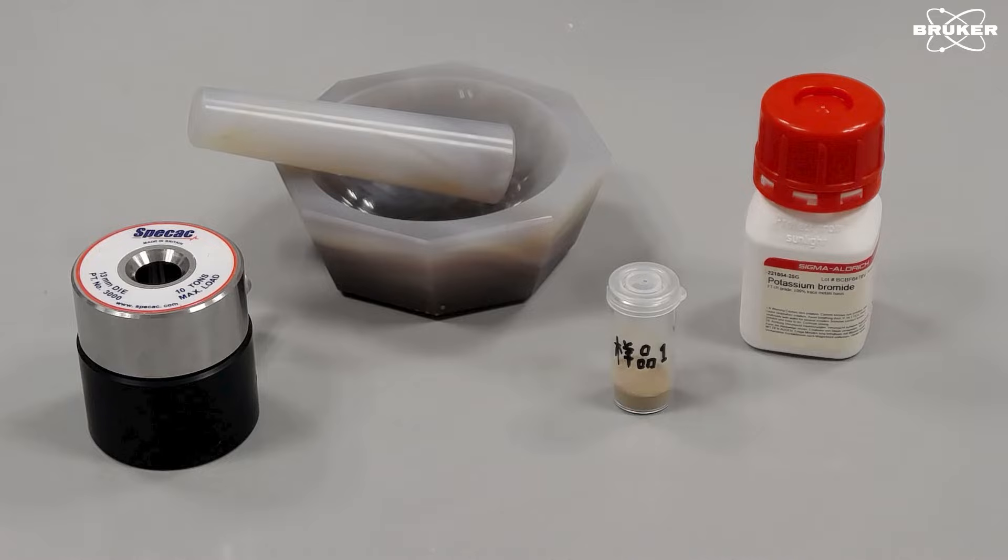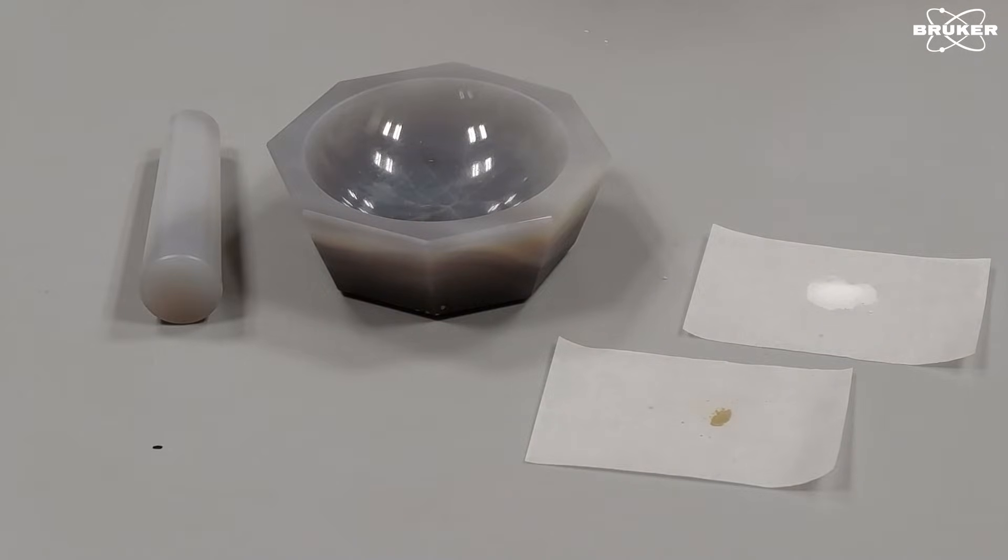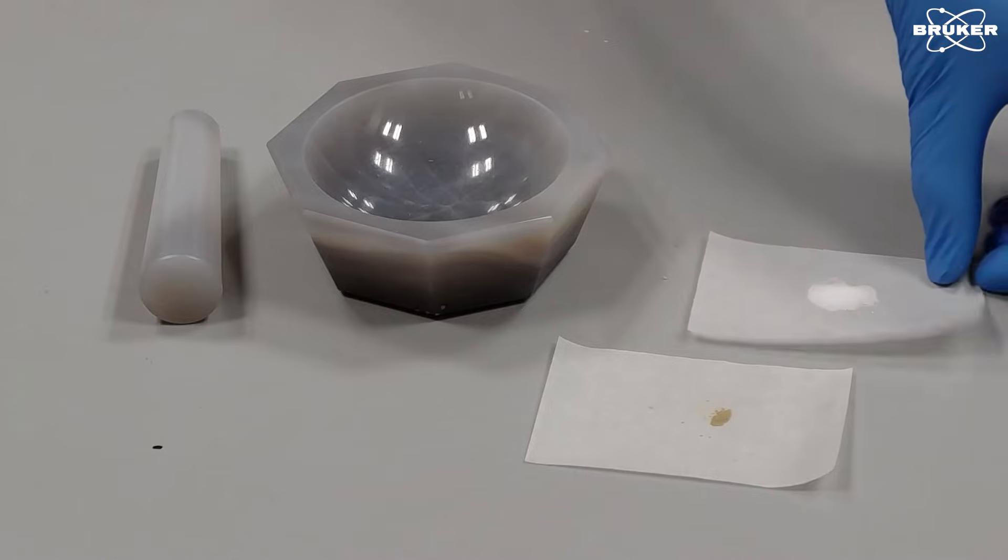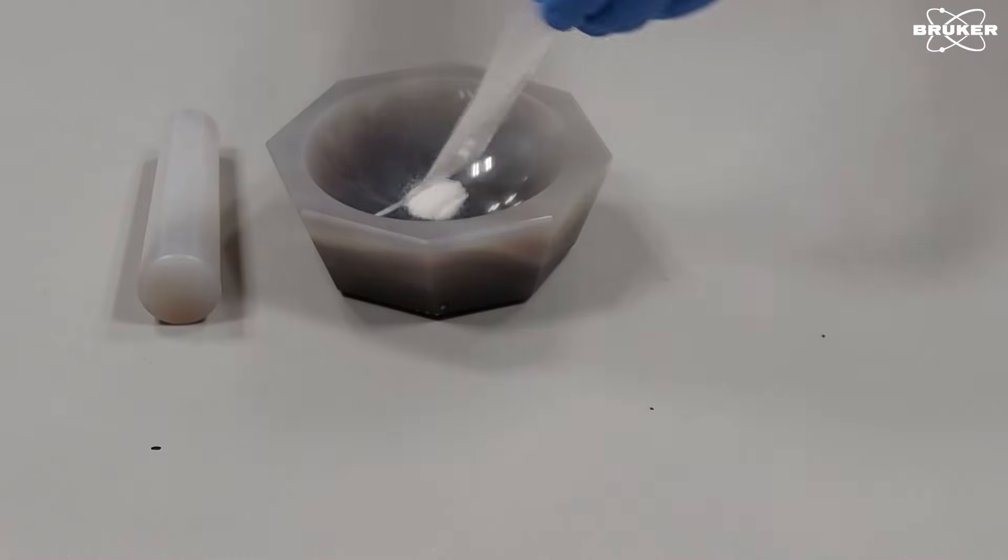First we weigh in KBR and sample. Please note that using too much of your sample can lead to bad IR spectra. It's best to adjust the sample concentration to your sample, but a good rule of thumb is about 0.5 to 2% of sample per weight.